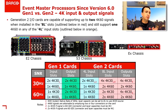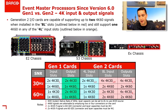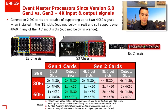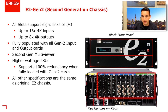When people talk about Gen 1 versus Gen 2, the reality is there's not much difference between the Gen 1 and Gen 2 chassis. The Gen 2 has an upgraded power supply, so if it's fully loaded with Gen 2 cards there are no power issues. The other major difference is the Gen 1 has the ability to take in up to 12 4K inputs, while the E2 Gen 2 has the ability to take up to 16 4K inputs — those are essentially the only differences.